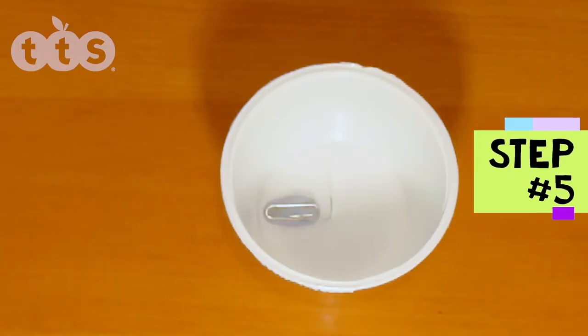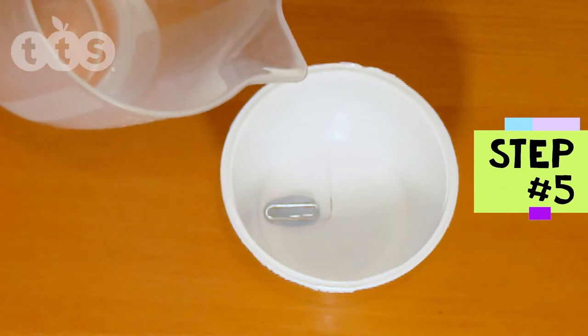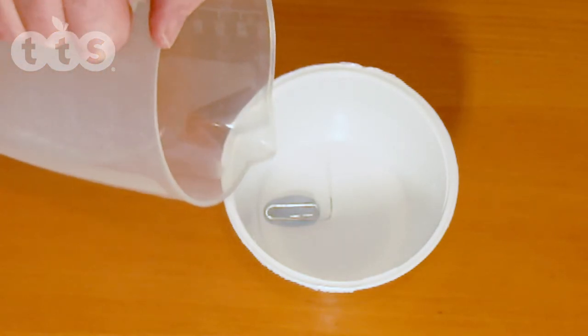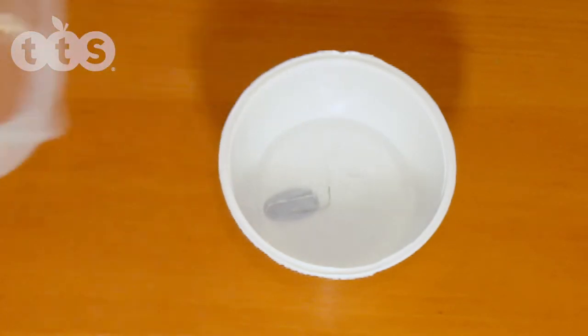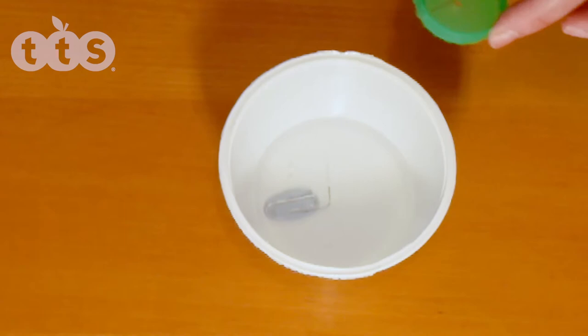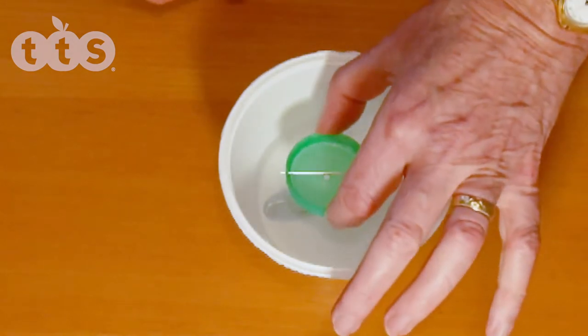Step five is to add water and fit the bottle lid. Pour water into the bowl until it comes about halfway up the leg of the paperclip. Carefully place the hole in the bottle lid over the long leg of the paperclip.